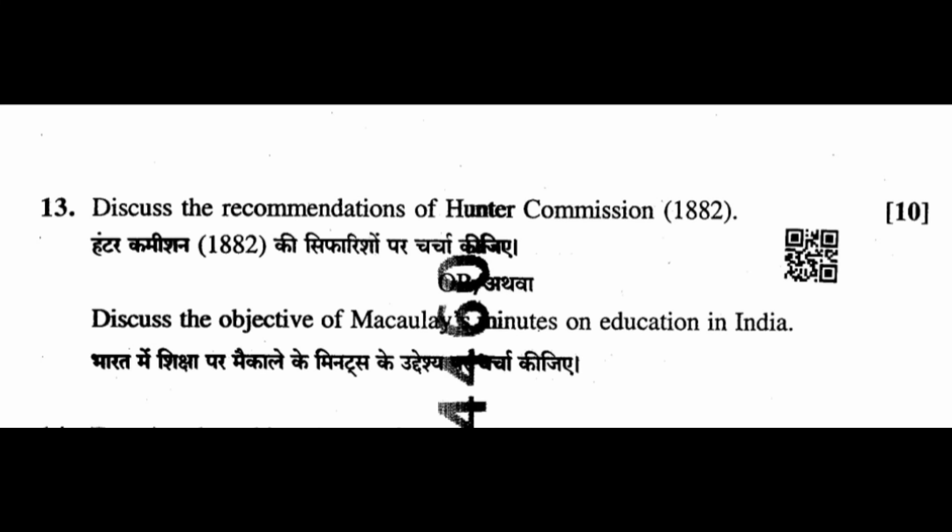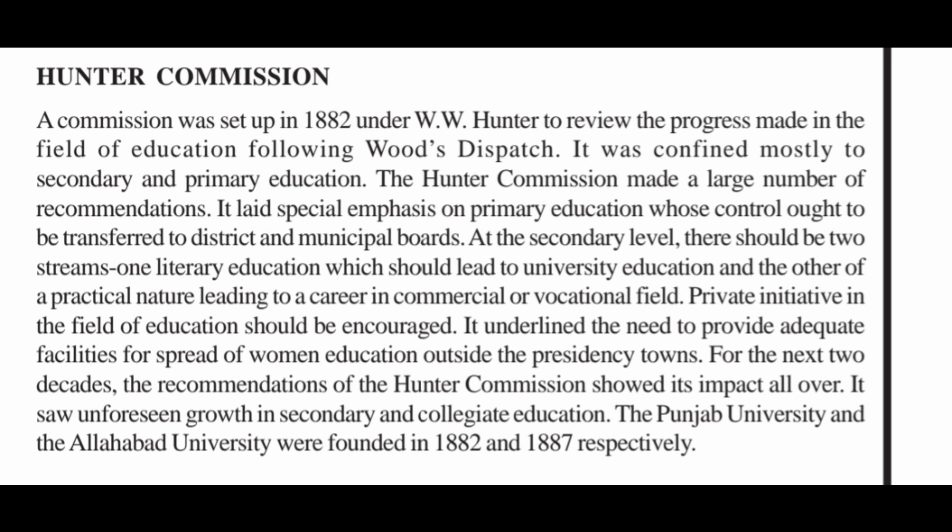Question 13: Discuss the recommendations of the Hunter Commission. A commission was set up in 1882 under W.W. Hunter to review the progress made in the field of education following Wood's Dispatch. It was confined mostly to secondary and primary education. The Hunter Commission made a large number of recommendations: it laid special emphasis on primary education, whose control ought to be transferred to district and municipal boards. At the secondary level, there should be two streams — one of literary education leading to university education, and the other of a practical nature leading to careers in commercial and vocational fields. Private initiative in education should be encouraged. It underlined the need to provide adequate facilities for the spread of women's education outside the presidency towns. The Punjab University and Allahabad University were founded in 1882 and 1887 respectively.